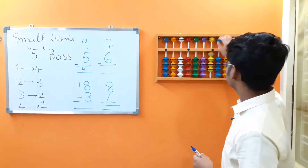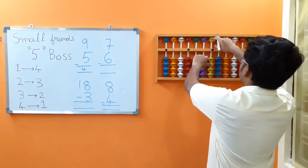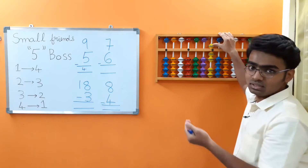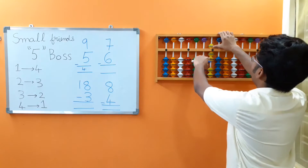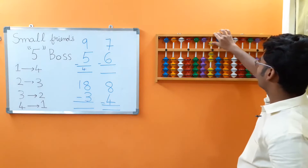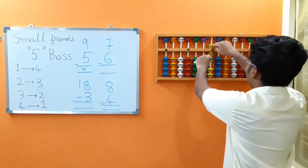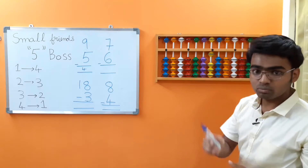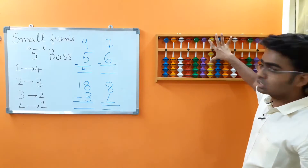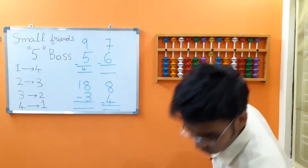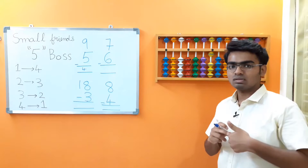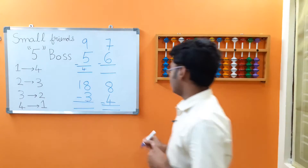7 minus 6. Let's place 7 here. We have to subtract 6. We have enough beads to subtract 6 here, so we can subtract 6 directly. Now see my technique — I am not doing 5 and 1 separately. Instead, I am doing it with a technique. Ideally you should be doing it like this on your small abacus. We got the answer as 1. I'll explain all these hand techniques in later videos.